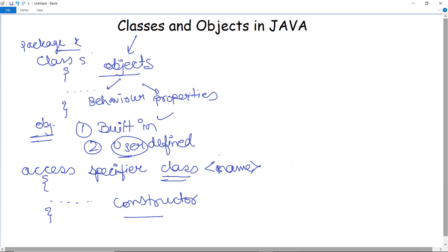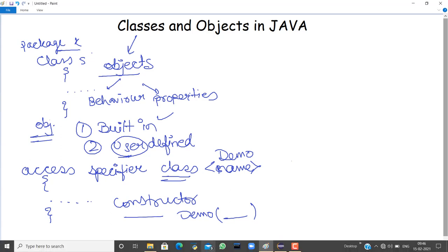A constructor has the same name as the class. For example, here we say the name of the class is demo. So the constructor name will be demo only when it is initialized and if there are no parameters passed, this is just blank, then it is known as a default constructor. It is called within the class body only.